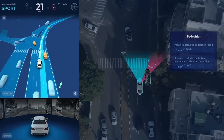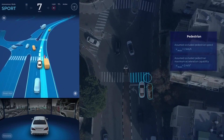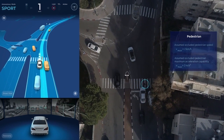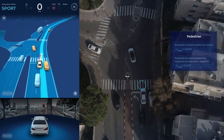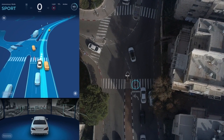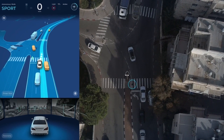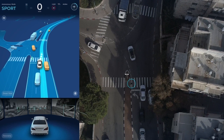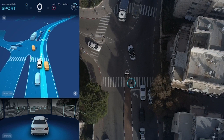After the AV does in fact detect a pedestrian, it continues to decelerate until coming to a full stop in order to give way to the pedestrian. Had the AV not made this assumption on what might exist behind the occlusion, it might not have had enough time to decelerate once the pedestrian had come into view.